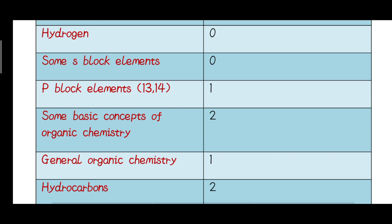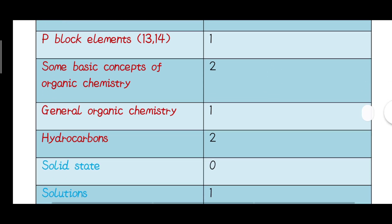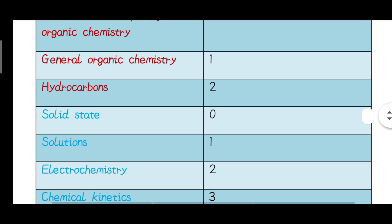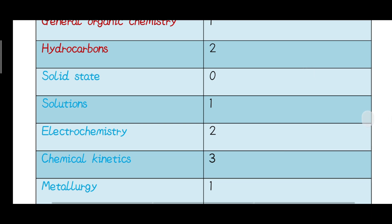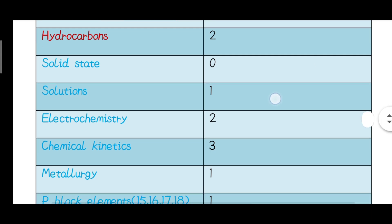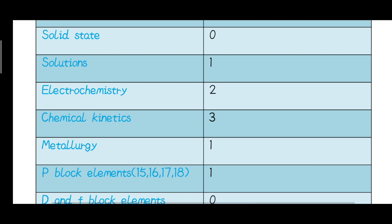Isomerism is easy. General organic chemistry is acid-related. Hydrocarbons involve isomerism; one question involves sodium metal in the presence of liquid ammonia reacting to form a product. There is also a question about the solid state and a question about solutions. Electrochemistry has a question, and chemical kinetics has a question as well.